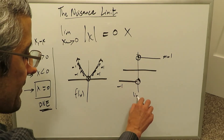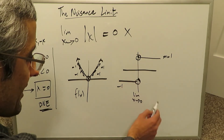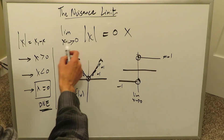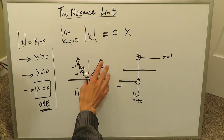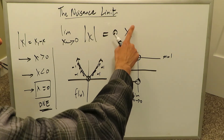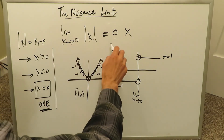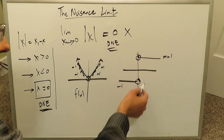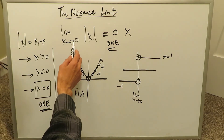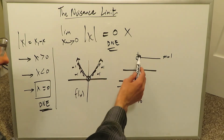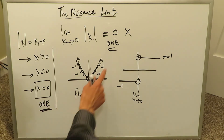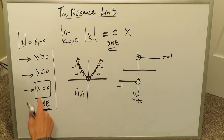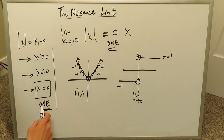At x approaching 0, either from the left or the right, there's no limit forming. Therefore, for someone to say the limit as x approaches 0 of absolute value of x equals 0 is wrong. The correct answer is DNE — the limit does not exist. It specifically does not exist at x equal to 0, but for x larger than 0 or x less than 0, the limit does exist and equals positive 1 or minus 1 respectively.